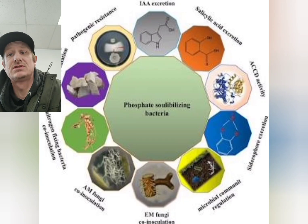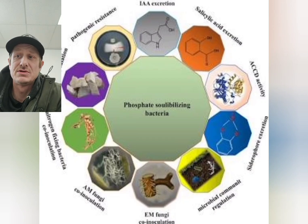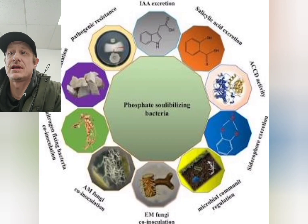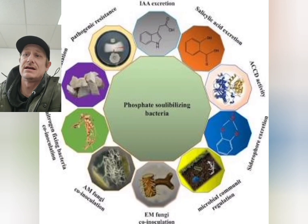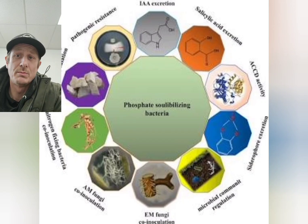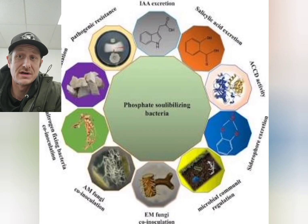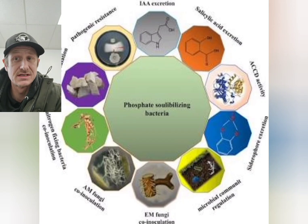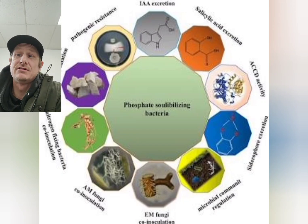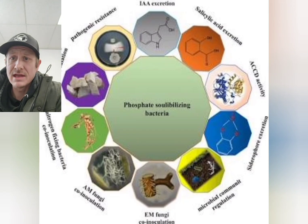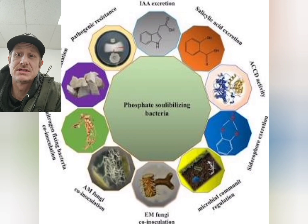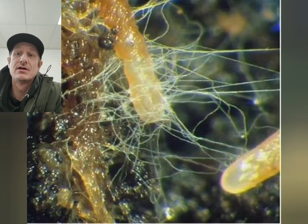There are things like Pseudomonas, which is a bacteria that produces organic acids like gluconic acid, and it dissolves mineral-bound phosphorus. You also have Bacillus species, which are spore-forming bacteria that secrete phosphatases and other phosphorus-degrading enzymes to release the phosphorus from organic matter.